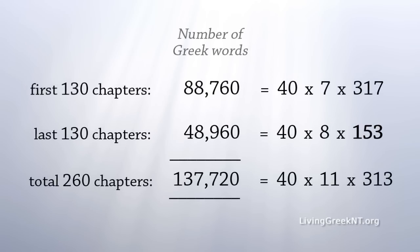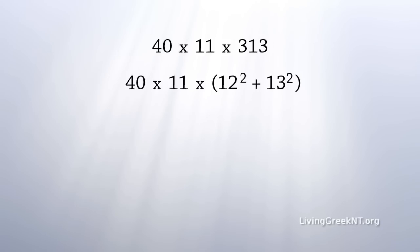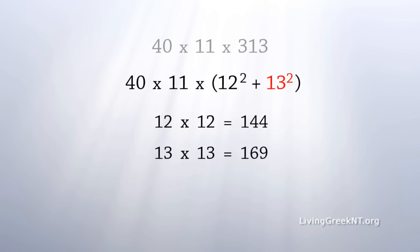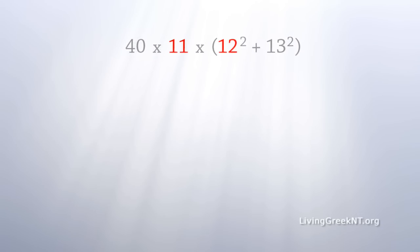Now, the total number of words in the Greek text of the New Testament — 137,720 — is expressed as 40 times 11 times 313. To express this in a different form: 40 times 11 times the quantity 12 squared plus 13 squared. 12 squared is 144, 13 squared is 169, and 144 plus 169 is 313. So here we have another sequence: 11, 12, 13 — a sequence that shows up in the Bible.